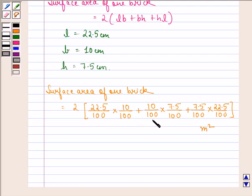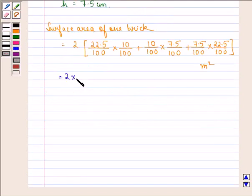Now from all these terms we can take 1 upon 100 into 1 upon 100 common. So we have 2 into 1 by 100 multiplied by 100 multiplied by 22.5 into 10 will be 225, 7.5 into 10 will be 75 and 7.5 into 22.5 will be 168.75 meter square.